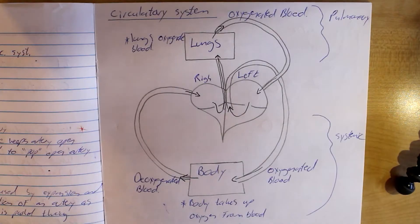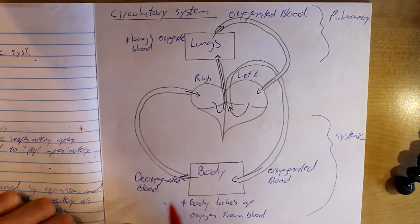We have what is known as a double circulatory system. What that means is that blood is pumped through our heart twice to complete one circuit. Let's take a look at what that looks like.